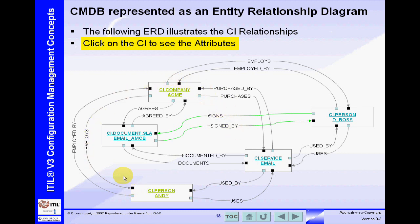Looking at these relationships, you start seeing what they are. For example, Andy is employed by the Acme Corporation, and in the opposite direction, the Acme Corporation employs Andy. That's a very important relationship. These relationships are critical to the success of the CMDB. Without these relationships, this represents only an inventory database. We want the relationships so that we better understand the effect of making changes on our services.